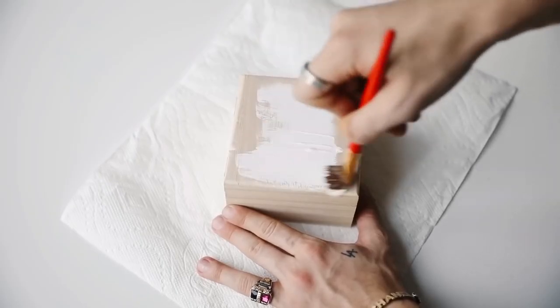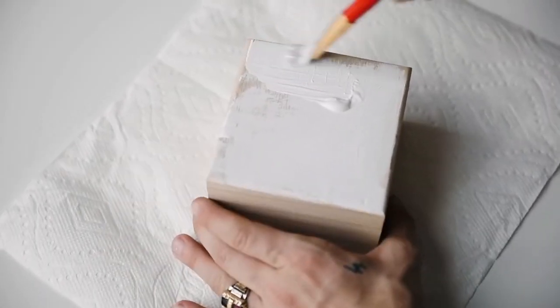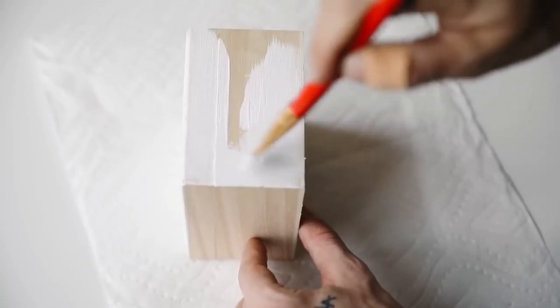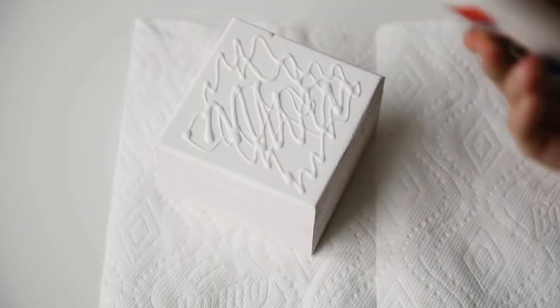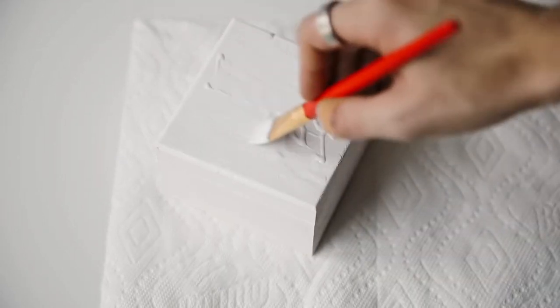The first thing you're going to want to do is paint it with the color that you want your cracks to be. I painted it white to start. You could paint it gold and have a gold crack underneath black, which I think would be really pretty, or you could paint it however you'd like.